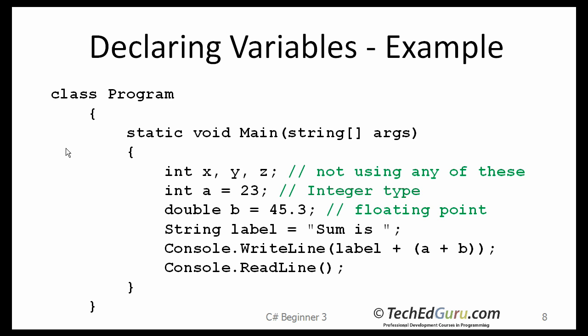Here is an example. On the first line, I am declaring three variables, x, y, z. They are all of the int type. On the second line, I am declaring one variable, a, which is of the int or the integer type and I am assigning an initial value to it, 23. The next one is a double type called b and it has been given a value of 45.3. After that, we have a variable called label, a string type, which contains the label that I will be using for displaying my results.